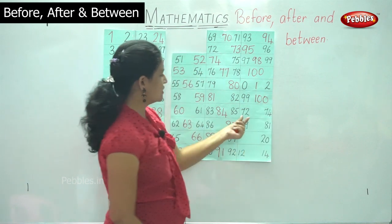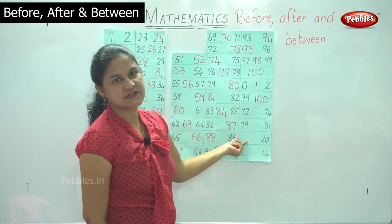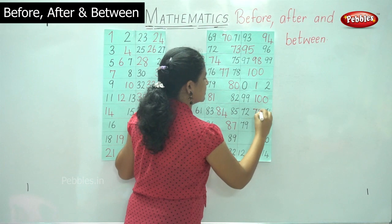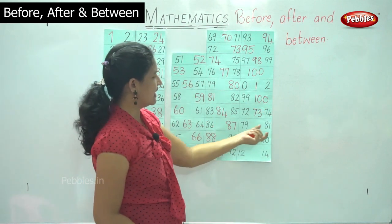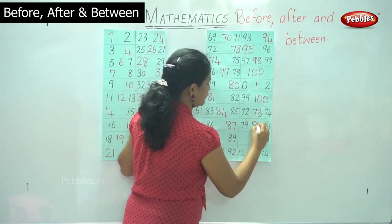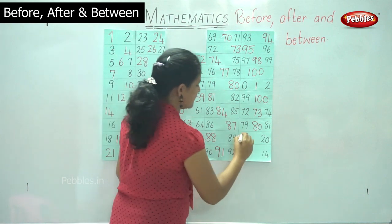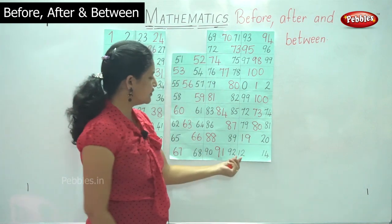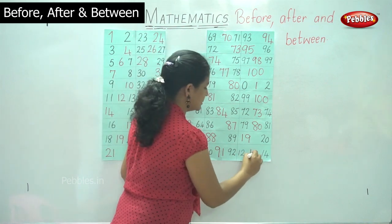Then we have the numbers seventy-two and seventy-four, and what comes between seventy-two and seventy-four is number seventy-three. Between seventy-nine and eighty-one it is number eighty. What number comes before twenty? It is number nineteen. And between number twelve and number fourteen we have number thirteen.